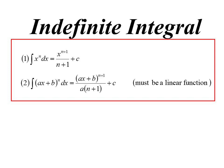Then there's what's sometimes known as the useful theorem, because it's very useful. If you have some function to the power of n, we can still use that idea of add one to the power over the power. But we must also divide by the coefficient of x. This only works for linear functions.